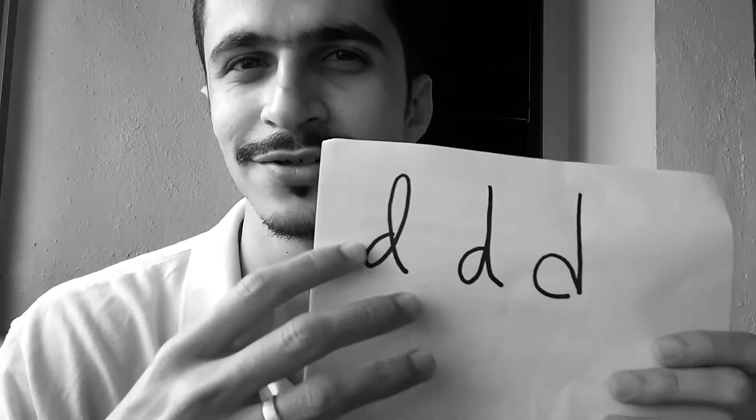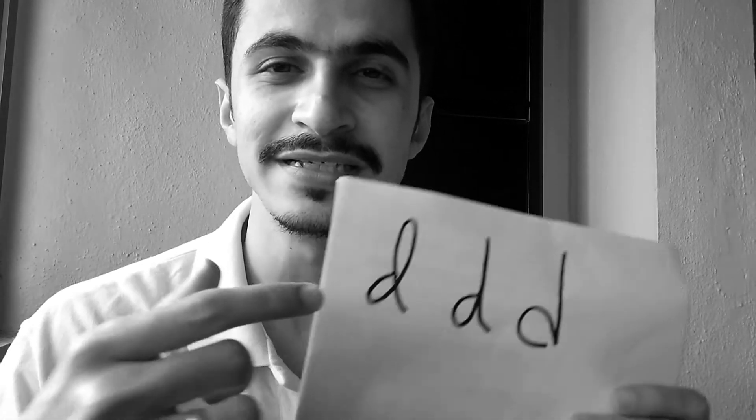Hello everyone, welcome to today's video. I'm going to explain what the letter D means in graphology. These are the three formations we are going to learn today, and what they represent as a mindset. The letter D represents food — our mindset while eating food and how that affects our physicality.